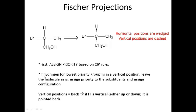To assign configuration to a Fischer projection, if the hydrogen is vertical — meaning up or down — you go through your normal procedure for assigning configuration. First you assign priority, then you determine whether the groups are oriented clockwise or counterclockwise. Assigning priority is based on atomic mass.